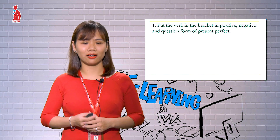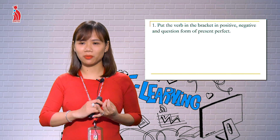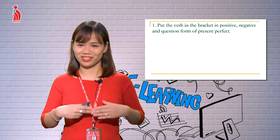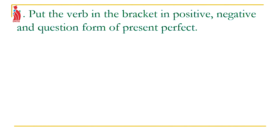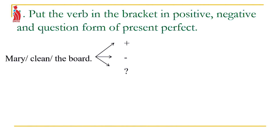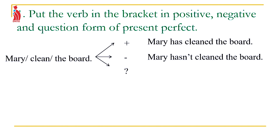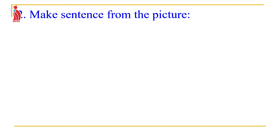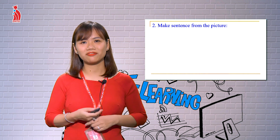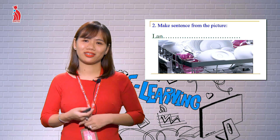So we've reviewed the uses, structures, and signal words of the present perfect tense. Now let's do some exercises to check our understanding. Please conjugate the given verbs. Write the sentence in three forms: affirmative, negative, and question. You have 20 seconds.